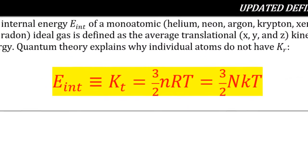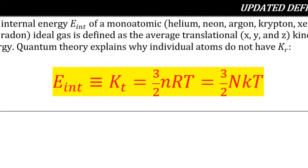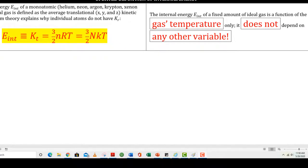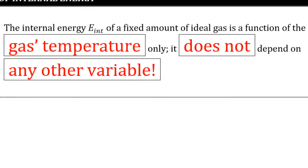In many ways, this is the culmination of our effort. We now have three different expressions for internal energy — we can say internal energy is the kinetic energy of the system, specifically translational kinetic energy, though we'll soon expand that to include rotational kinetic energy as well. The internal kinetic energy of a gas depends solely on the gas's temperature. That's not saying internal energy equals temperature, but it is a function of temperature and only temperature.